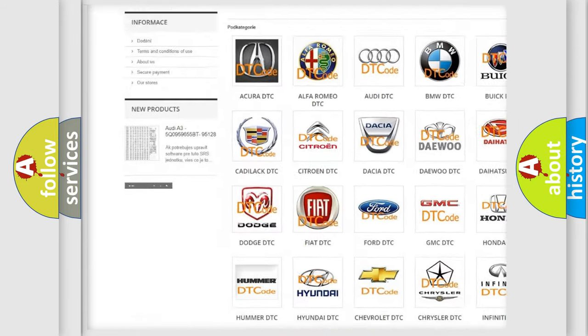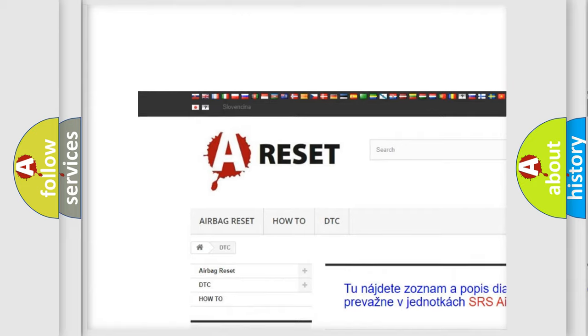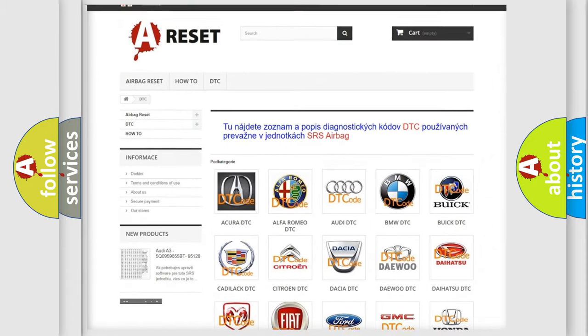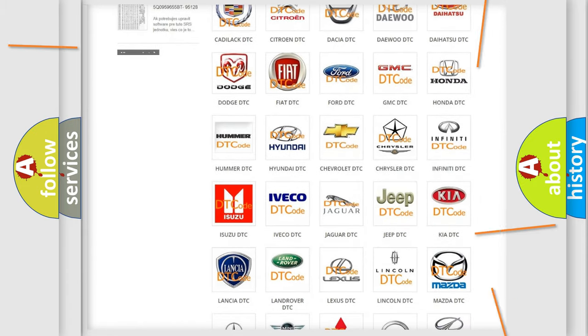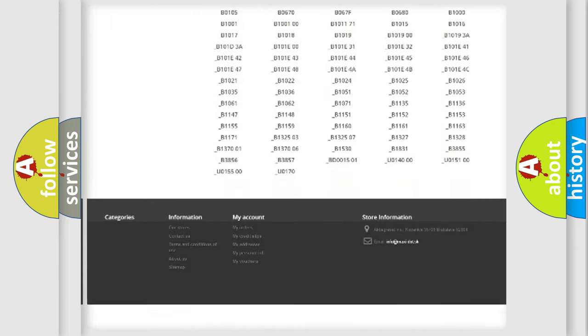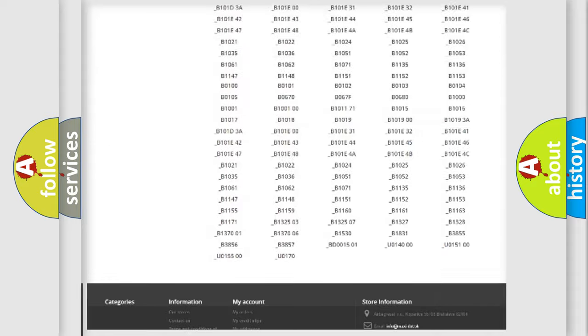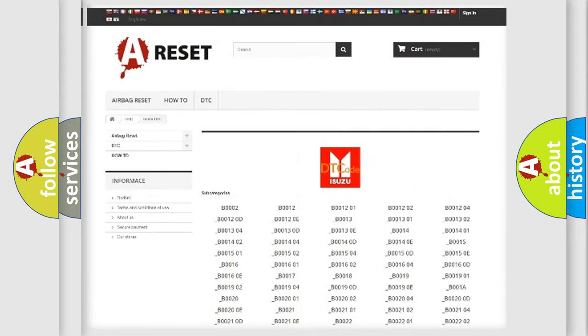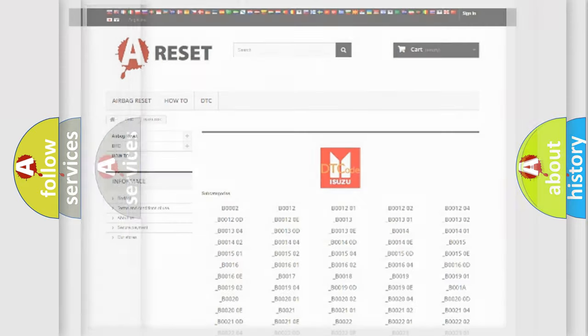Our website airbagreset.sk produces useful videos for you. You do not have to go through the OBD2 protocol anymore to know how to troubleshoot any car breakdown. You will find all the diagnostic codes that can be diagnosed in Isuzu vehicles, and many other useful things.